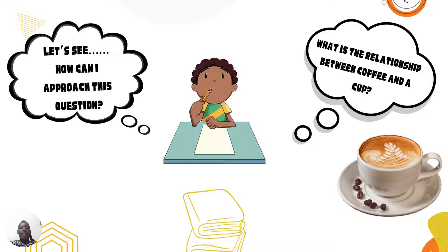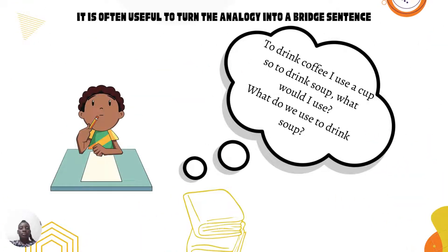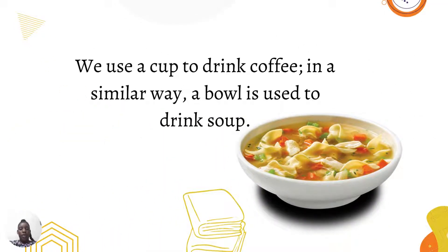Let's see how we can approach this question. What is the relationship between coffee and a cup? It is often best to turn our analogy into a bridge sentence: to drink coffee, I use a cup. So to drink soup, what would I use? We use a cup to drink coffee. In a similar way, a bowl is used to drink soup.